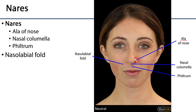Keep in mind that the nasal cavity is separated by a nasal septum. On the outside, contiguous and continuous with that septum, is a little bit of skin called the nasal columella. The nasal columella is situated between the nares, the nostrils.